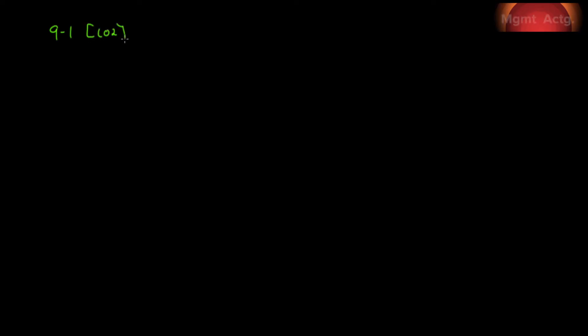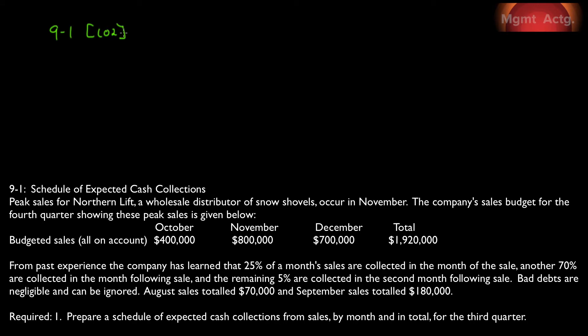We're going to do exercise 9.1, which will lead us through learning objective number two. We have a schedule of expected cash collections. Peak sales for Northern Lyft, a wholesale distributor of snow shovels, occur in November. The company's sales budget for the fourth quarter, showing these peak sales, is given below — budgeted sales all on account for October, November, December, and a total.